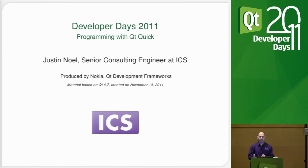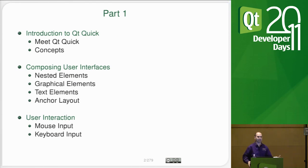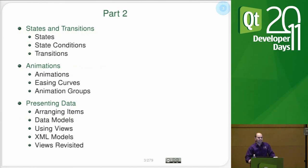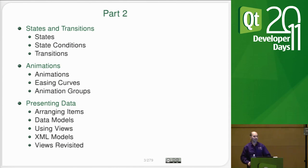Basically what we're going to be talking about today is the very basics of Qt Quick and QML — what it means to make items and components and how to lay them out. We're going to talk about how to allow the user to interact with your application via touching, clicking, or using a keyboard or keypad. We will also talk about states and transitions.